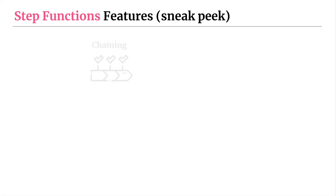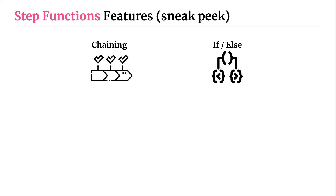Some of the different features you can perform: there's chaining, so you can perform sequences of tasks — do one thing, then the next, then the next. And potentially, if there's an error in one case, you can fall back to some kind of plan B. There are if-else statements, which are called choice blocks. You can say if one thing occurs, do this; if something else occurs, do that. And this is based on input data — the values of your data as they are flowing through your Step Function states.